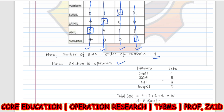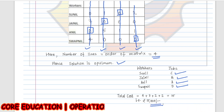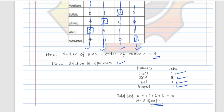The optimal assignment is: Sunil gets job C, Jainil gets job B, Anil gets job A, and Sopnil gets job D. The total cost is 4 + 7 + 2 + 2 = 15. Since all entries are given in thousands of rupees, the final answer is fifteen thousand rupees.